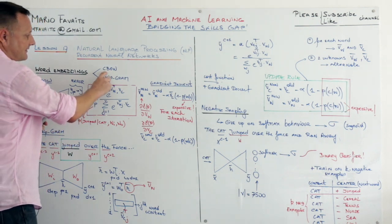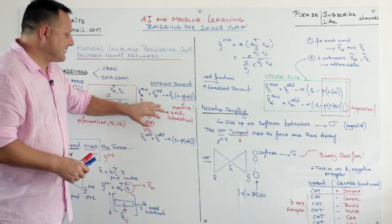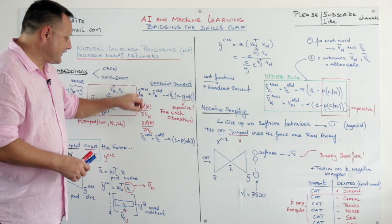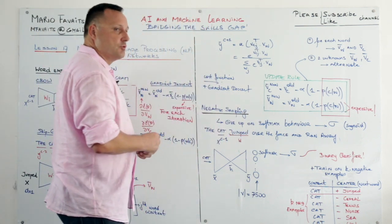There are two techniques: C-Bow and Skip-Gram. In C-Bow we have seen that the update rules for gradient descent are these two. And in Skip-Gram we have seen that these are the update rules.